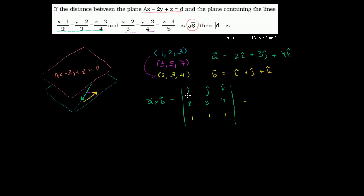For the i component: 3 times 1 minus 1 times 4 gives 3 minus 4, so negative i. For the j component: minus (2 times 1 minus 1 times 4) equals minus(2 minus 4) equals minus(negative 2), so plus 2j. For the k component: 2 times 1 minus 1 times 3 gives 2 minus 3, so negative k. Our normal vector is (-1, 2, -1).